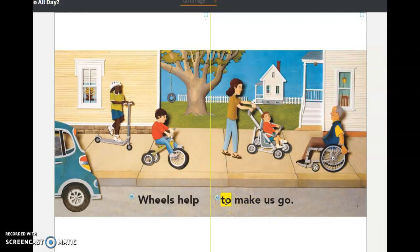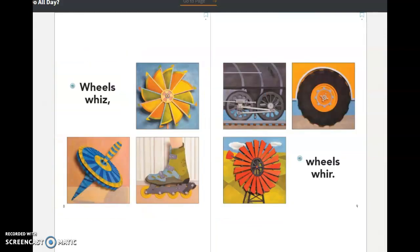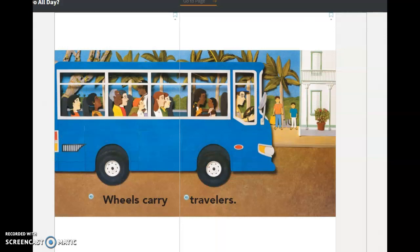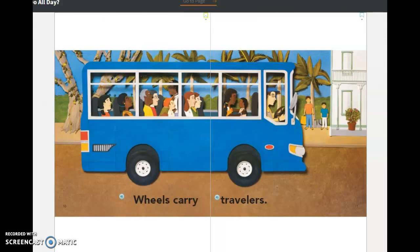Here's our sight word 'to.' They've even highlighted it in yellow for us. Wheels whiz. Wheels whir. Wheels carry travelers. So they're on the bus. They help us get from place to place.